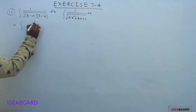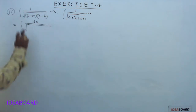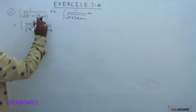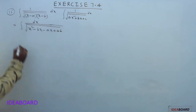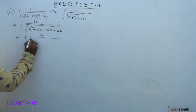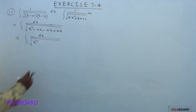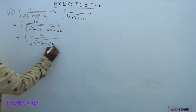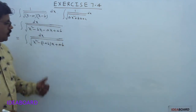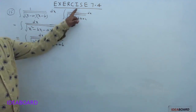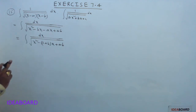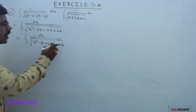First, multiply the two factors: (x minus a)(x minus b) gives x² minus (a plus b)x plus ab. So this is integral dx divided by square root of x² minus (a plus b)x plus ab. This integrand is of the form 1/√(ax²+bx+c). Here the x² coefficient is already 1. Then try to make this expression a perfect square.